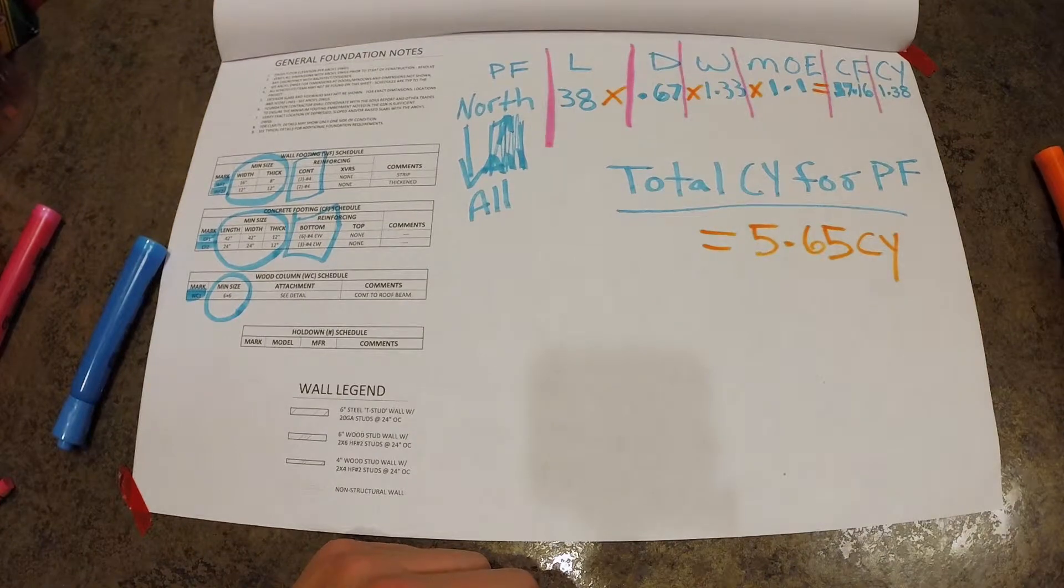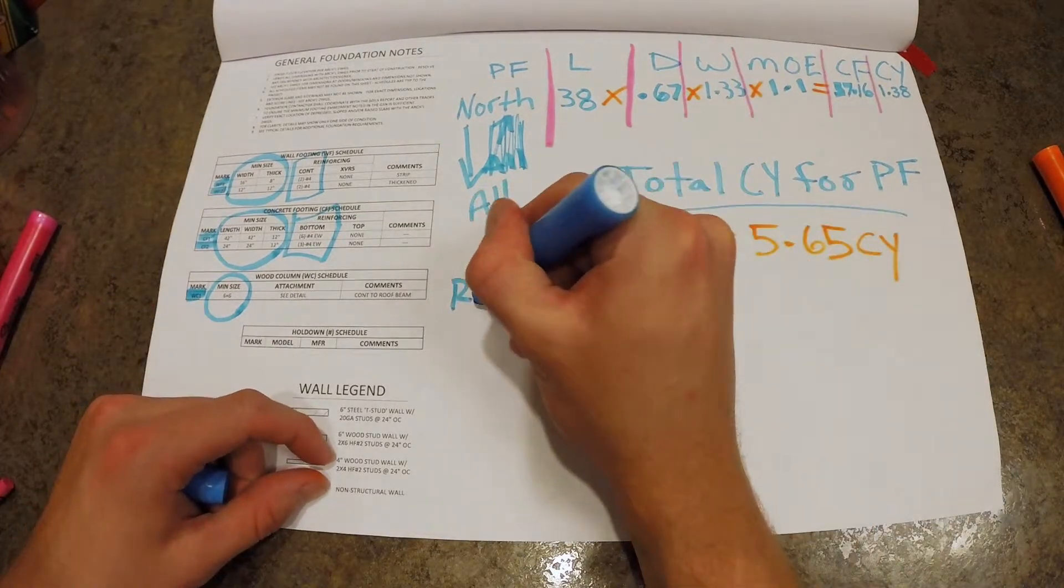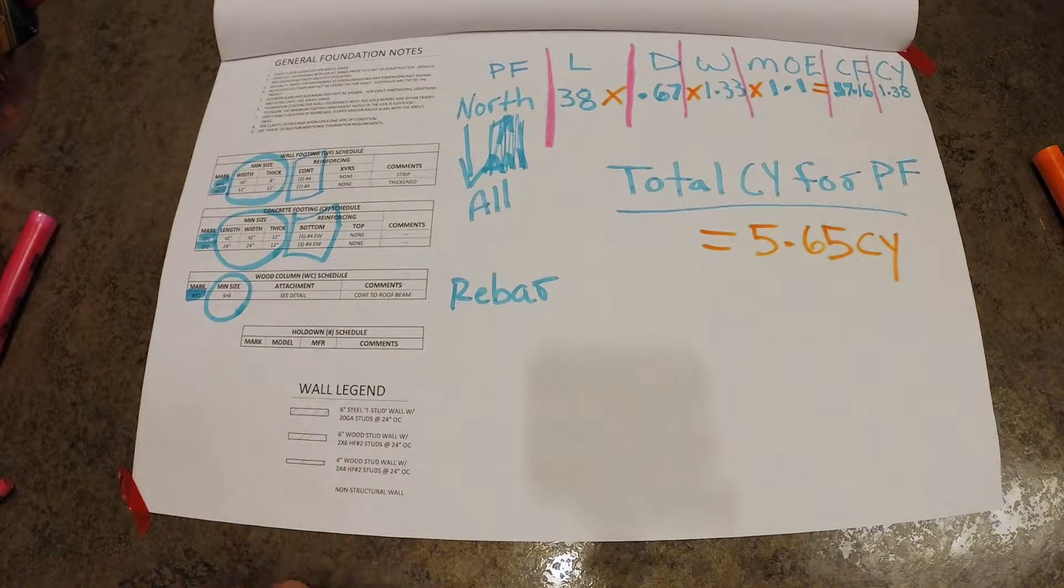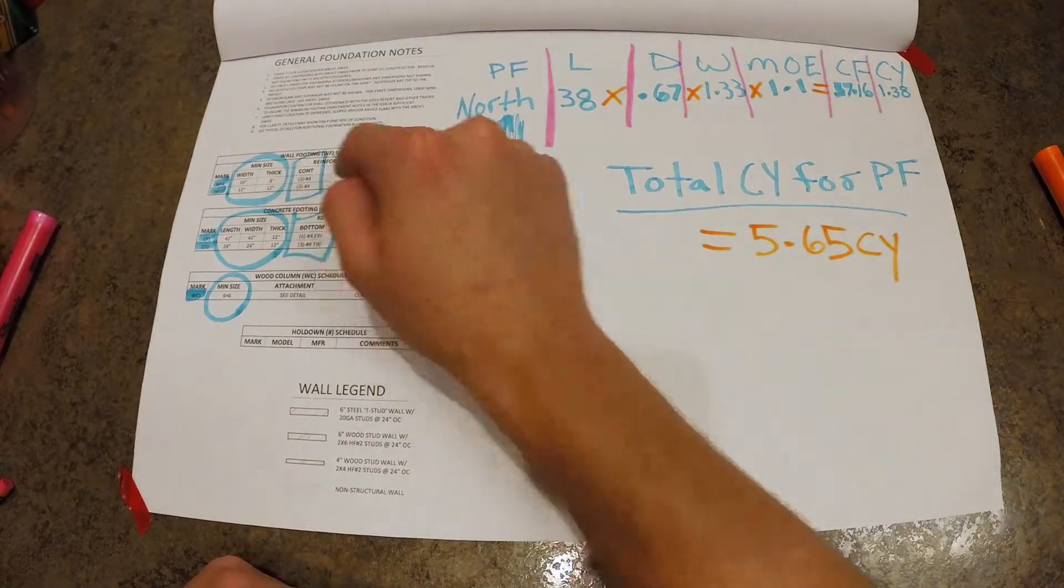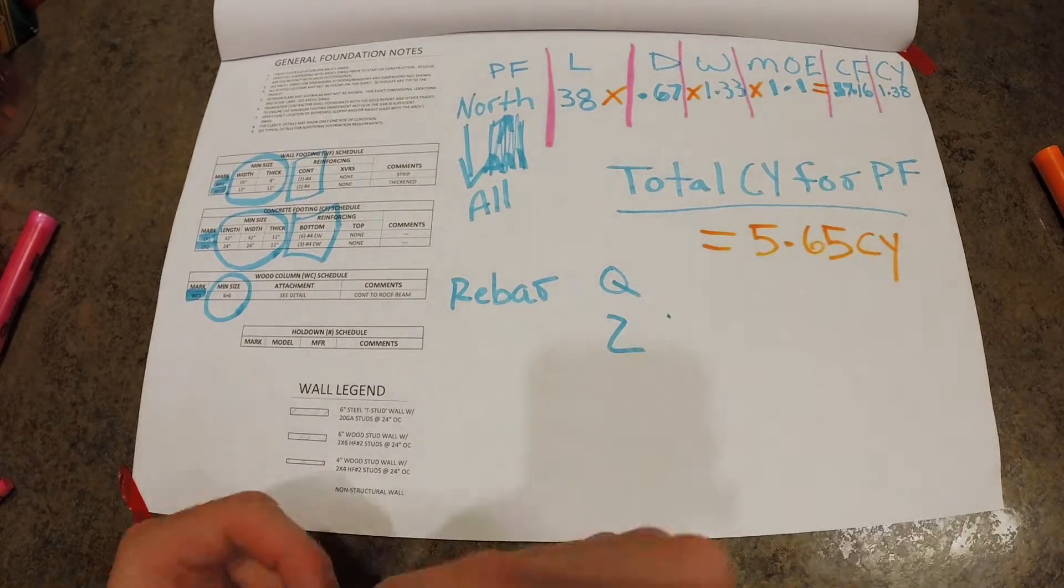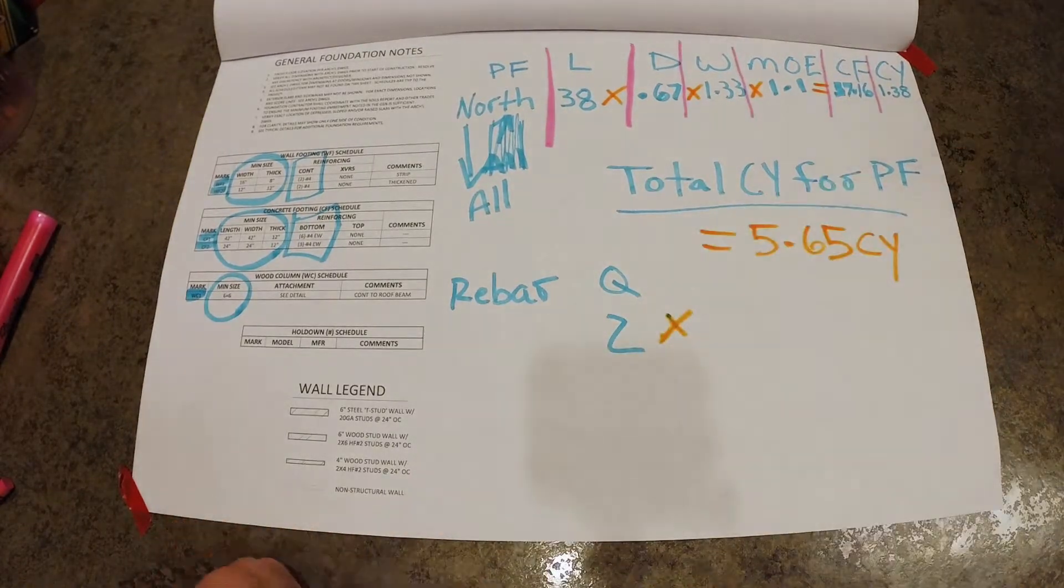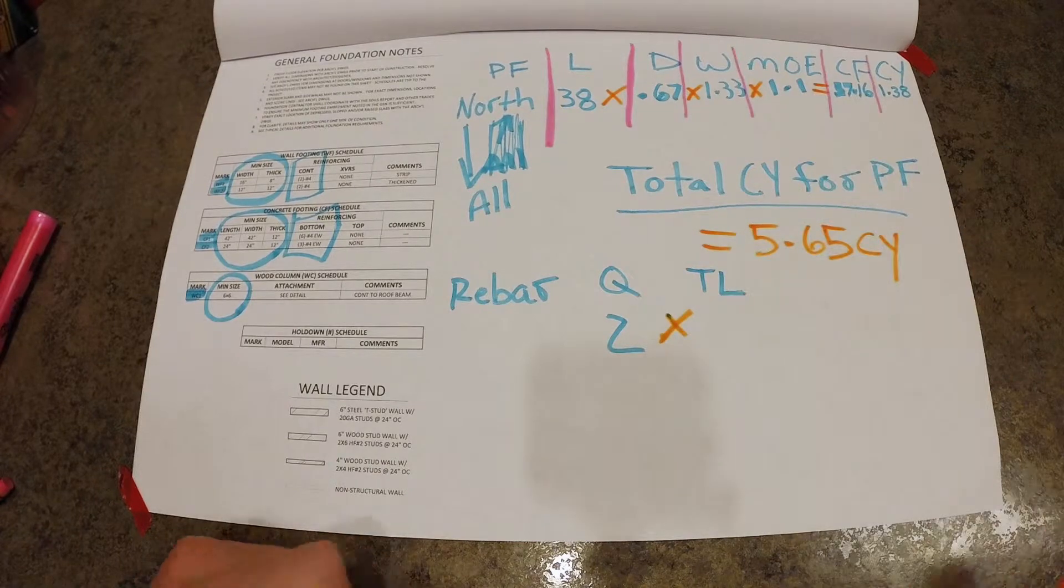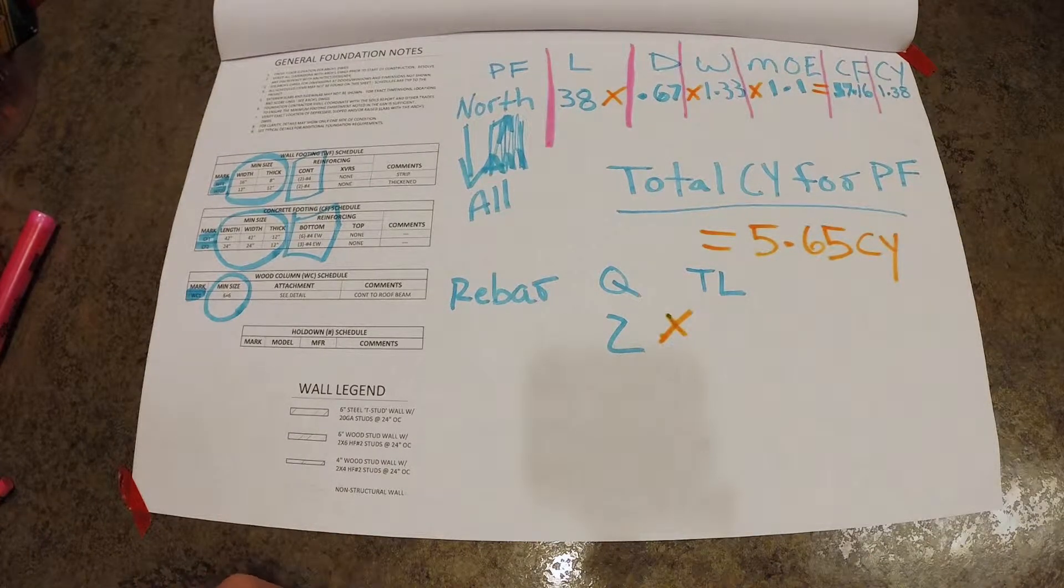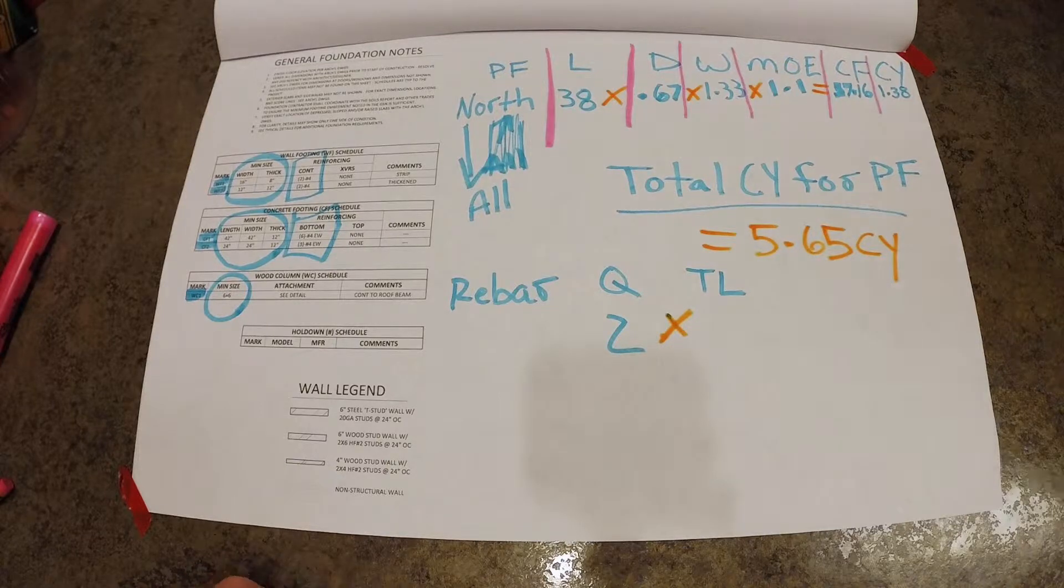So next we're going to look at rebar. In the same general foundation notes right there, it tells you how much rebar you got. So we got two pieces of number 4 per foot. And we've got a total length around that perimeter footing of 156 linear feet.